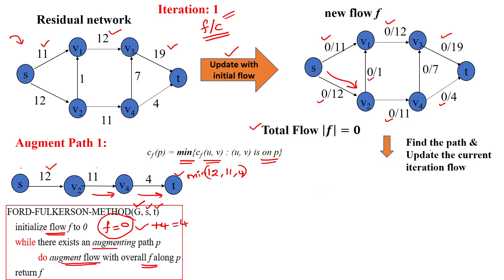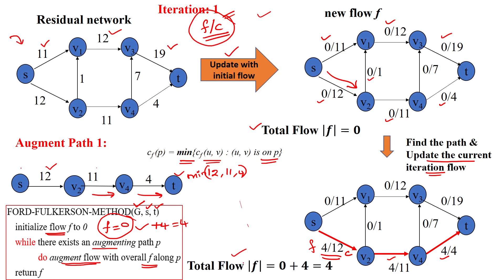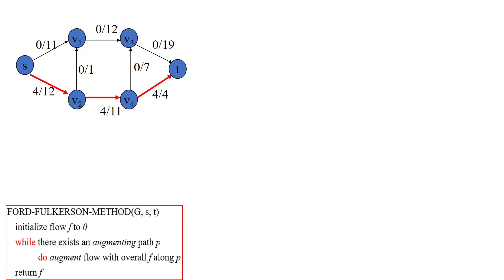After identifying the minimum, we update the current flow in iteration 1. The flow is 4 and the capacity is 12, represented as flow/capacity. We are representing 4 units of flow on this path. The total flow is now 4 units. We then proceed to iteration 2. This is the result obtained from iteration 1.